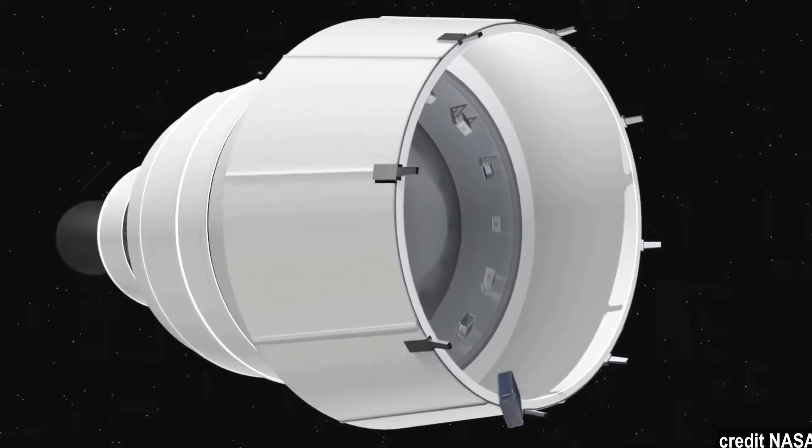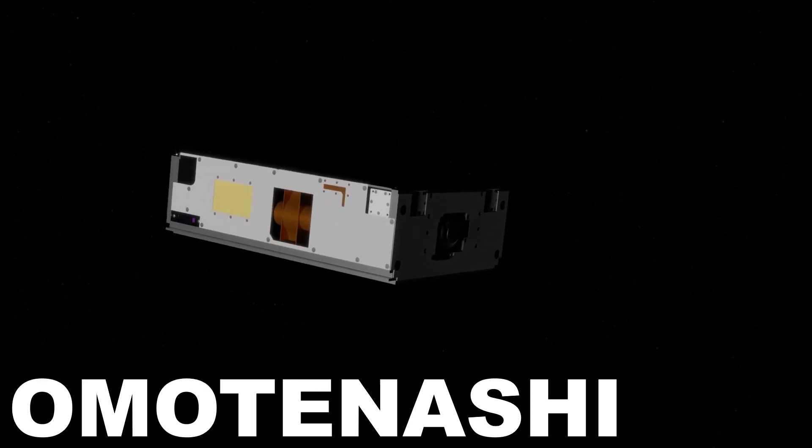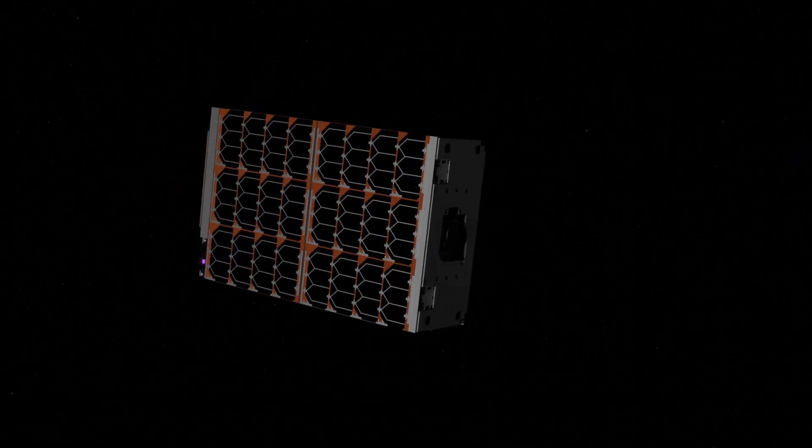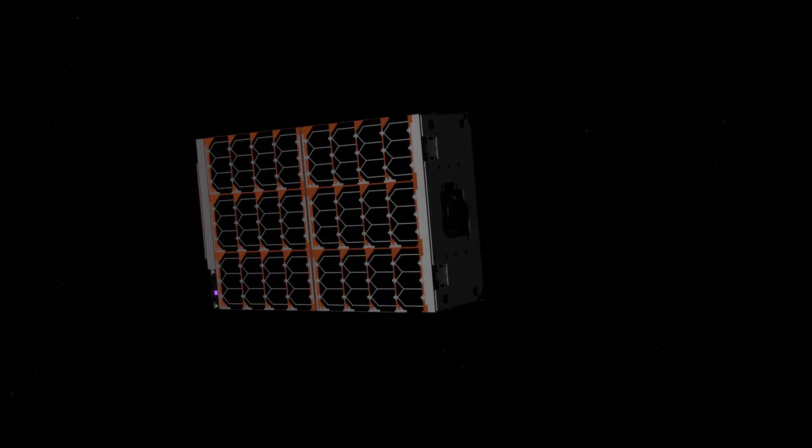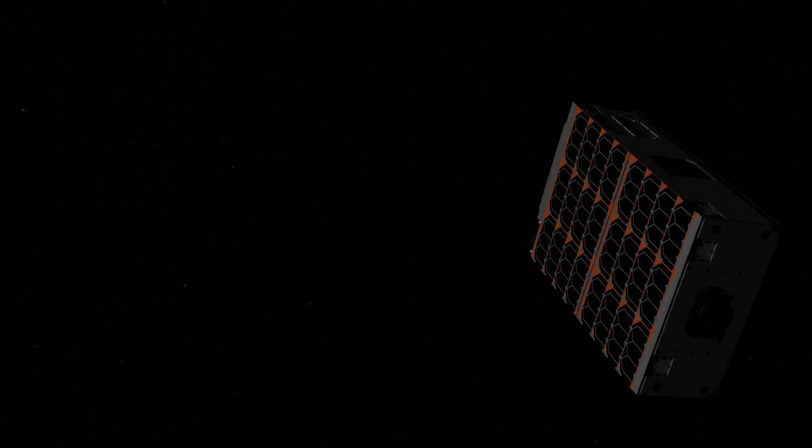After being released from SLS, it would have oriented itself using a set of reaction wheels, so its panels are pointing directly to the sun and measure radiation while it's coasting to the moon. Then, after a day or so, it would have put itself in a collision course using its attitude control thrusters.